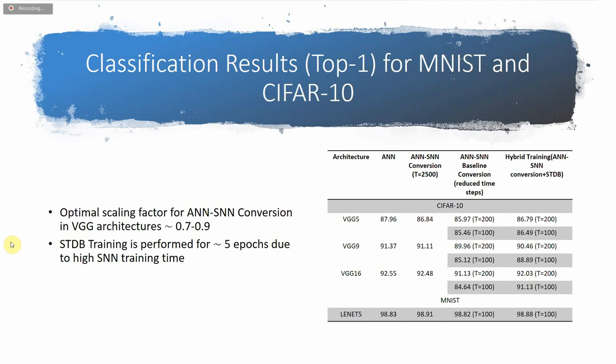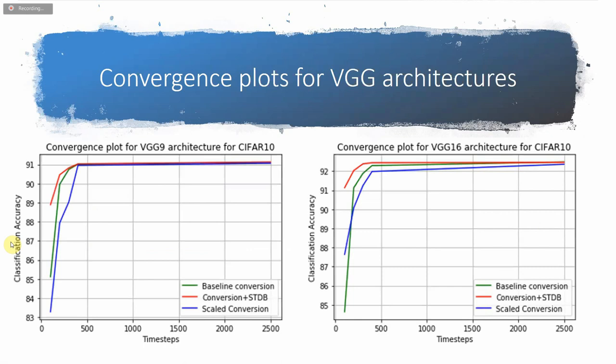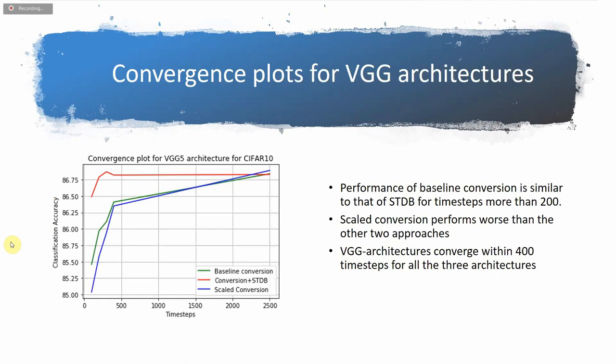These are the convergence plots for VGG-9 and VGG-16 architectures. The baseline conversion and the scaled conversion perform similarly when there are a large number of time steps — more than 500. Conversion plus STDP still gives the best performance, but only marginally better than the other two. The difference between the three training techniques is less than 0.5 percent even when time steps is as low as 300.